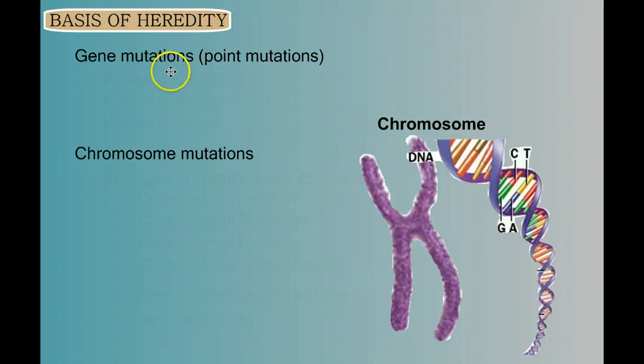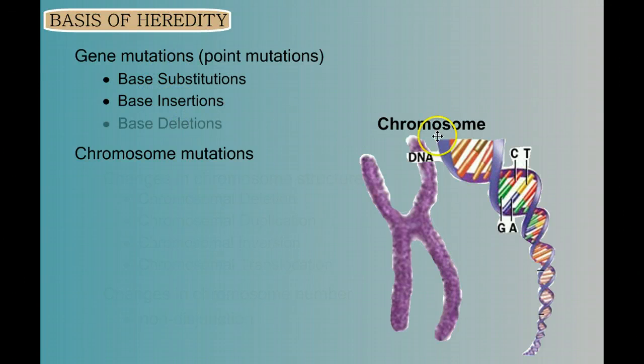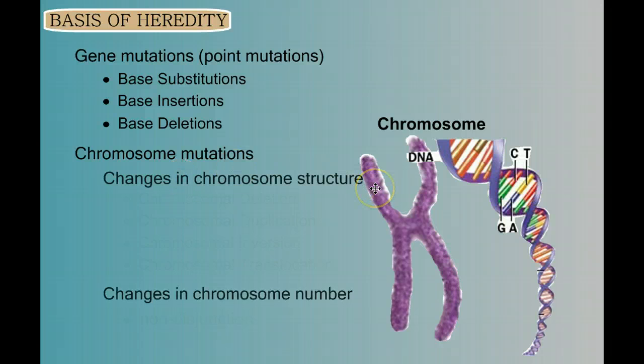So when we look at gene mutations like base substitutions, base insertions, and base deletions, we've got to look at this picture over here on the right. But when we look at chromosome mutations, we're going to talk about changes in chromosome structure or changes in chromosome number, and we're going to look at it on this scale. So it's really a scale thing.